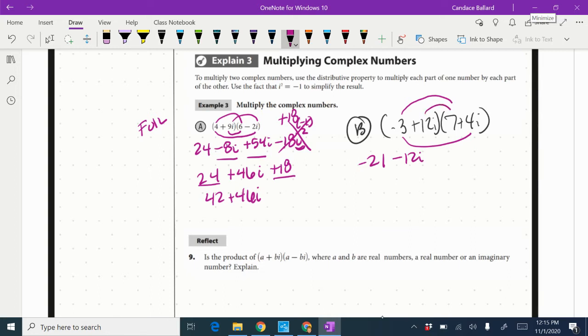12i times 7 is positive 84i. And then 12i times 4i would be positive 48i squared. And when I see i squared, I know that this term will be better known as negative 48 because the i squared represents negative 1.